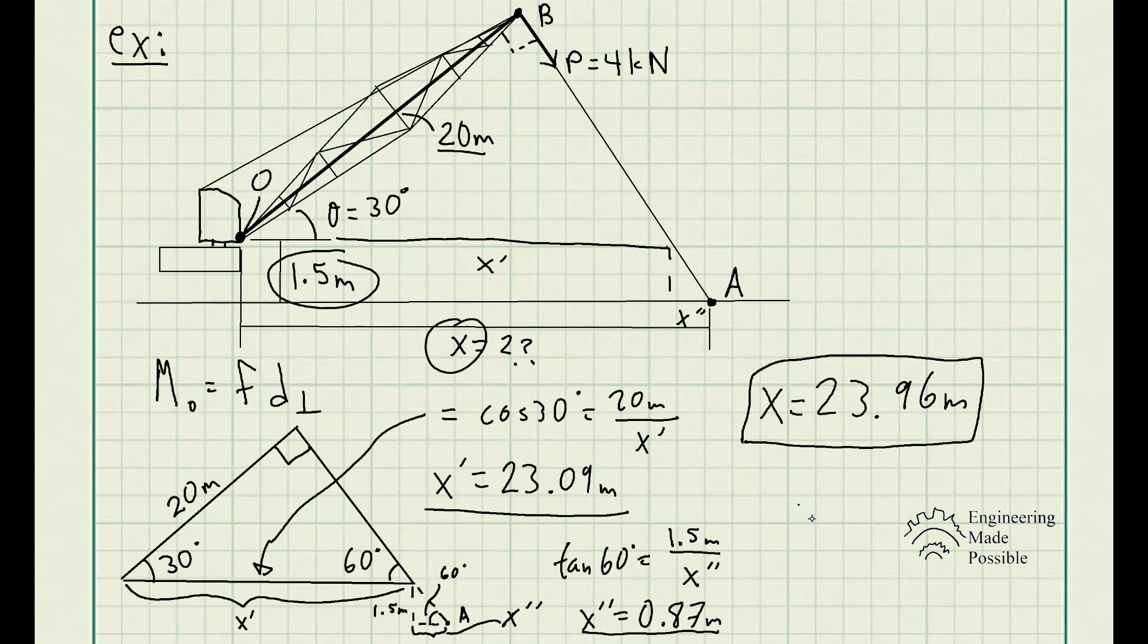In this case, the moment about O that's caused by the force P equals negative 80 kilonewton meters. Since that force would be rotating along O in the clockwise direction, and since I stated my sign convention counterclockwise being positive, the moment along O equals negative 80 kilonewton meters.